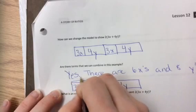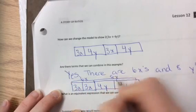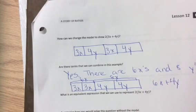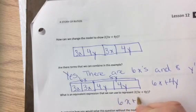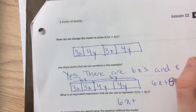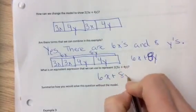This would be 6X and this would be 8Y. So I'd have 6X plus 8Y. What is the equivalent expression that we can use to represent? 2 times, we just did it, 6X plus, and that should be not 4Y, it should be 8Y. Sorry, hopefully you caught that. 6X plus 8Y.